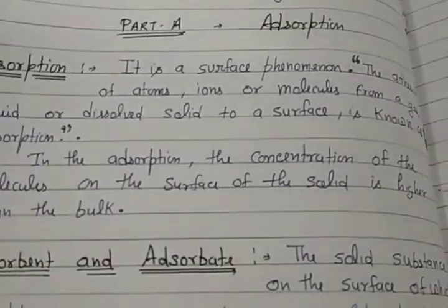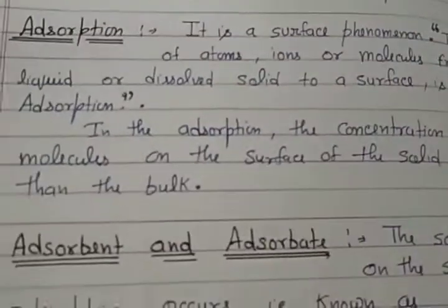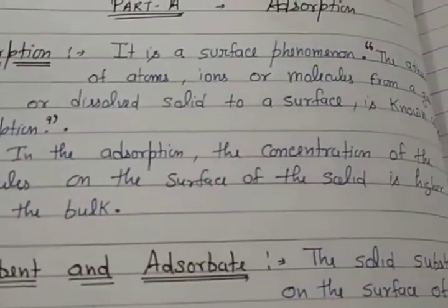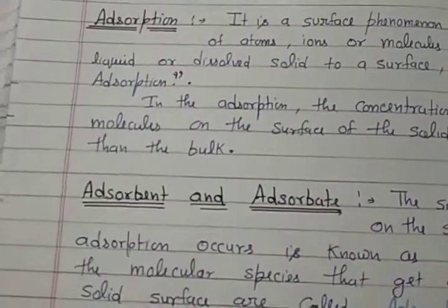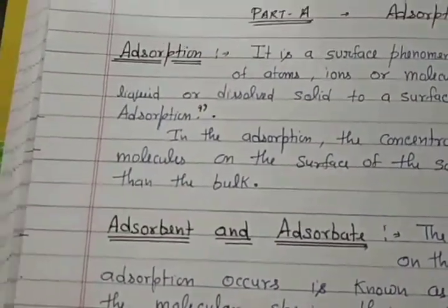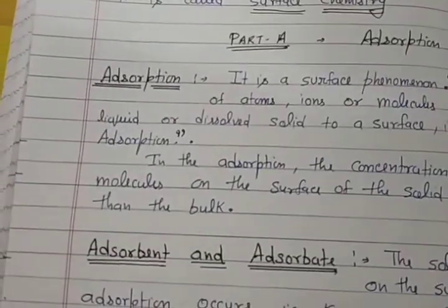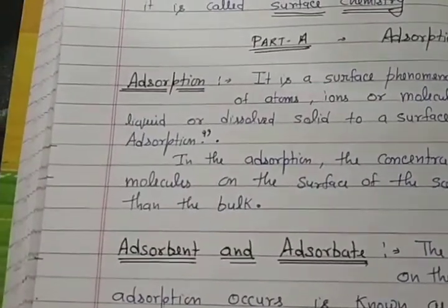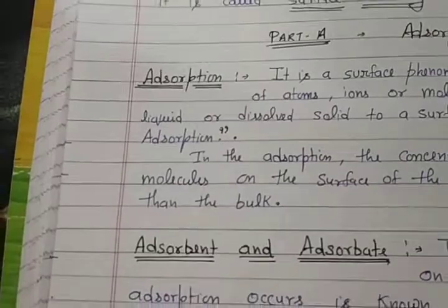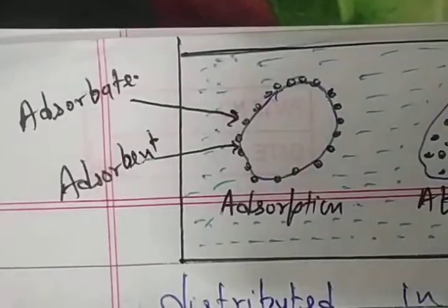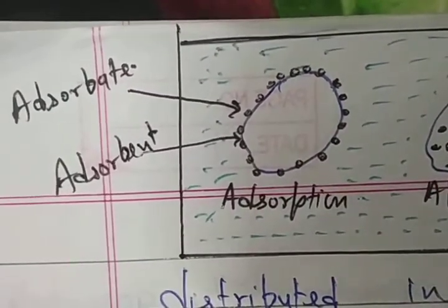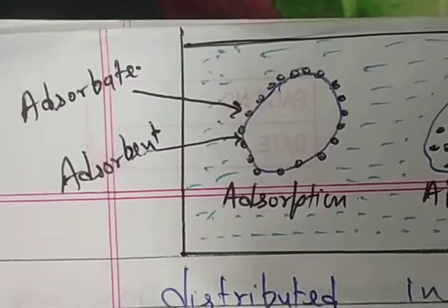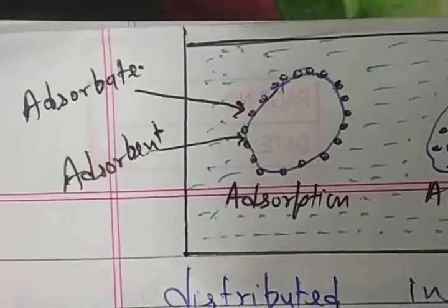In adsorption, the concentration of molecules on the surface of the solid is higher than in the bulk. So if you remember adsorption, the concentration of molecules on the surface is higher than the bulk concentration.